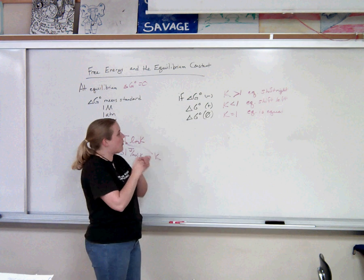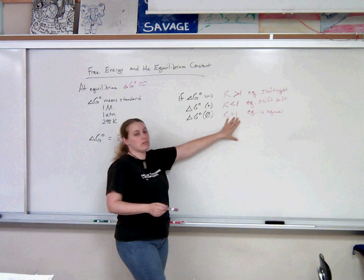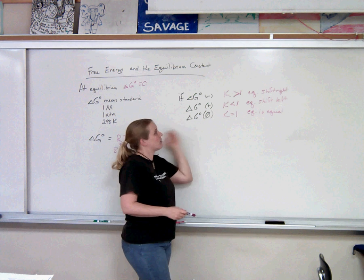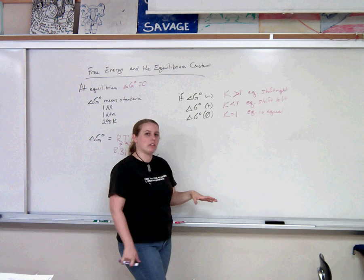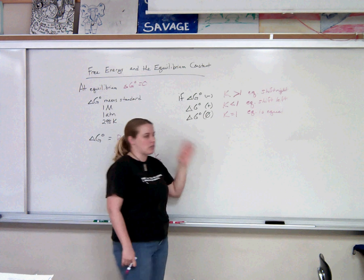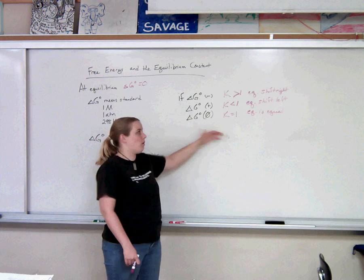So if we know what Gibbs is, we can compare it to what K is. Or if we know what K is, we know what sign Gibbs is. And so that was an excellent no-calculator kind of question for this information. How do you compare Gibbs to K? If you know one, you should be able to figure out the other.